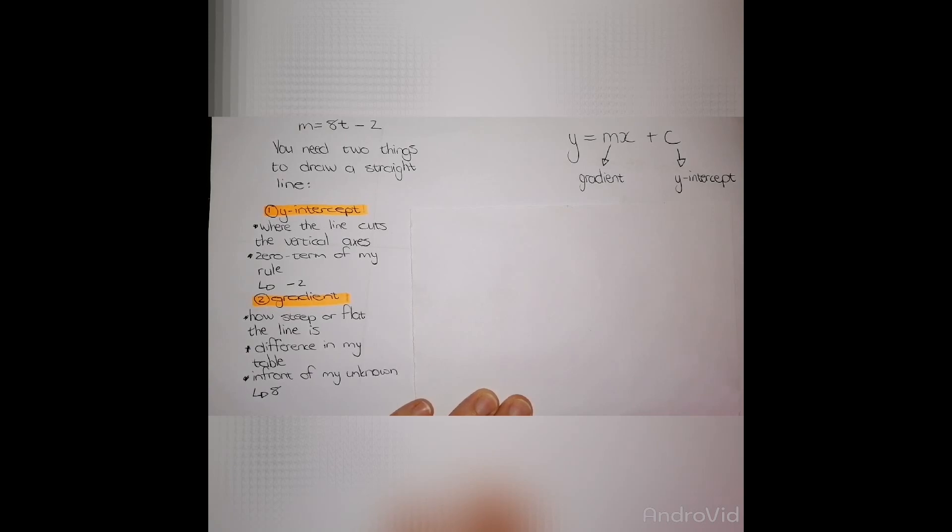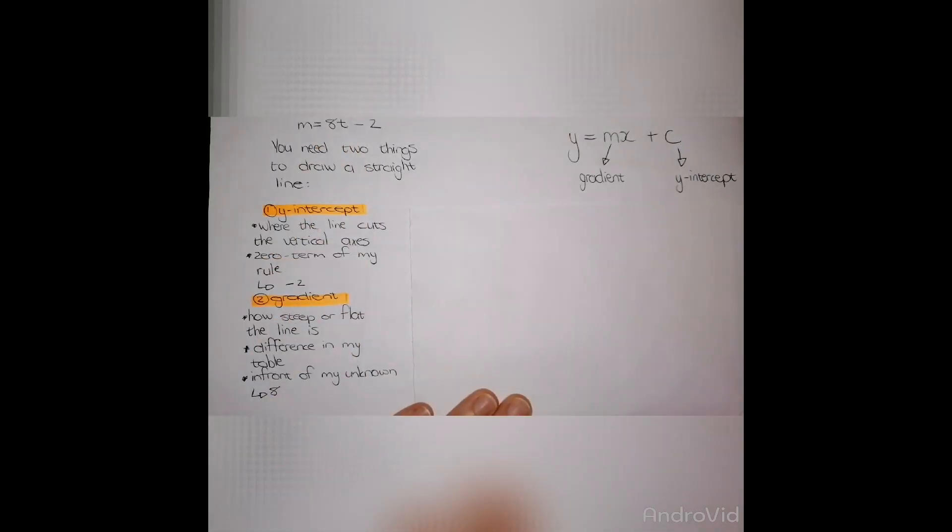The second thing I need to find is the gradient. The gradient shows us how steep or how flat a line is. The place we find the gradient value is on the linear table, and it is the difference column. In this case, we have identified that the gradient is 8.